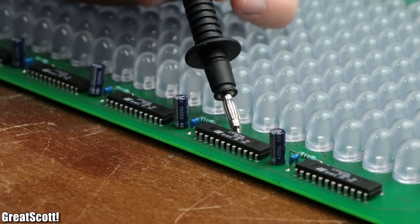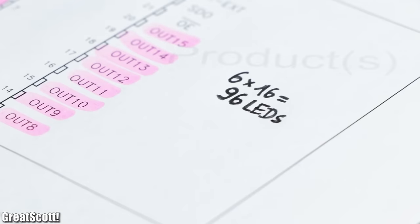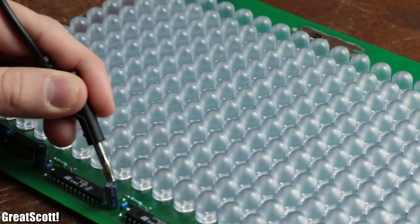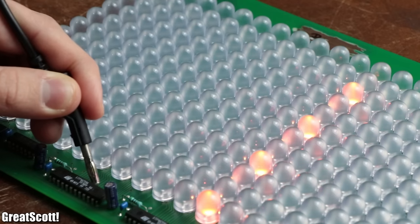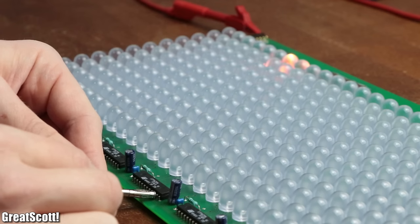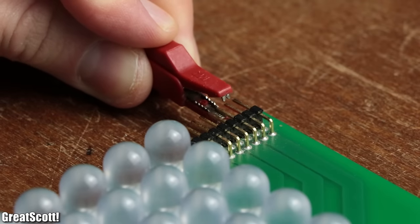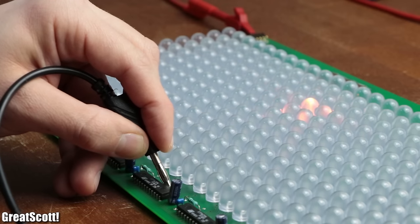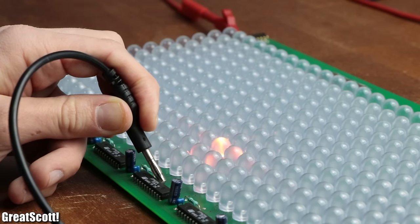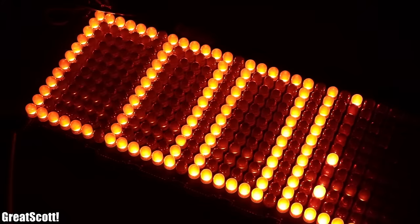Here begins the confusing part — each IC has only 16 outputs, meaning we could manage a total of 96 LEDs, but we have four times that amount with 384. The solution is that the cathodes of each individual LED in every fourth line are connected in parallel. So by firstly connecting the upper three lines to supply voltage, we control all LEDs in those lines individually using the LED sink ICs, then switch to the next three lines, and repeat — cycling so quickly our eyes see a static picture.